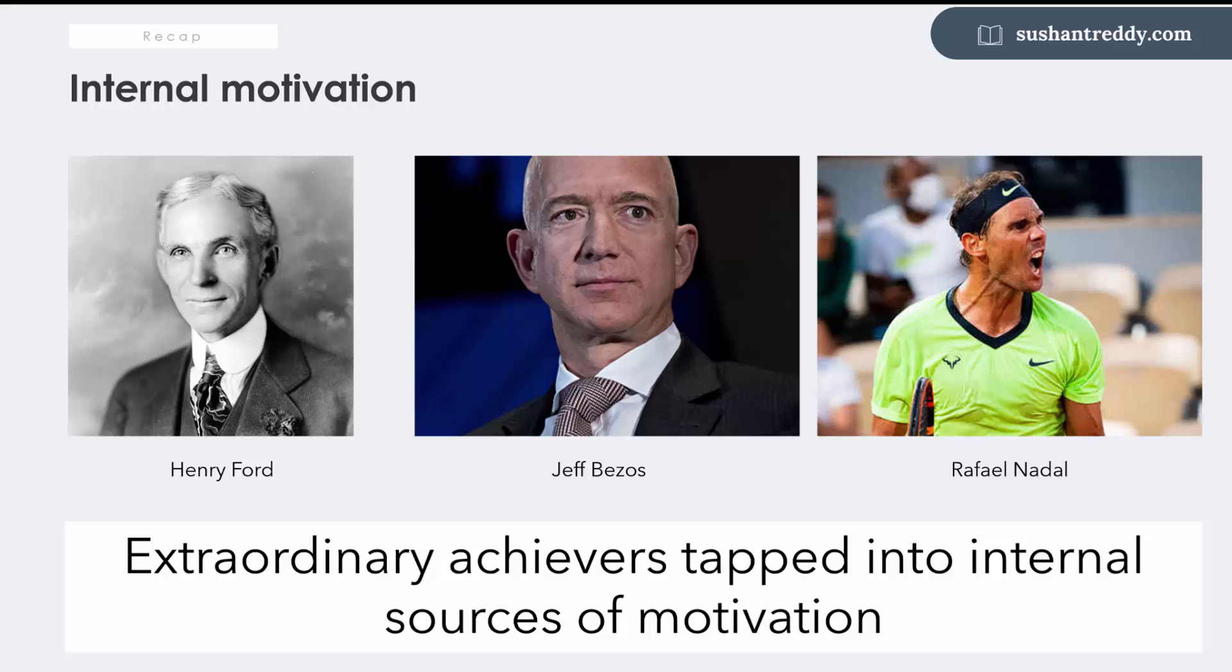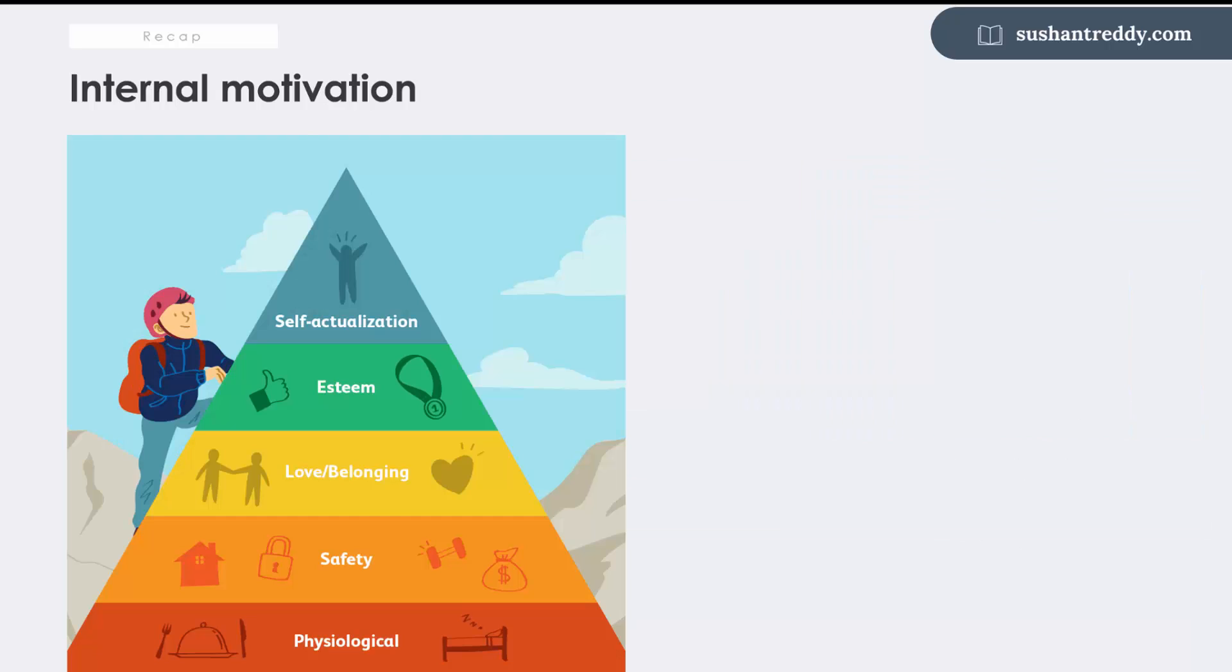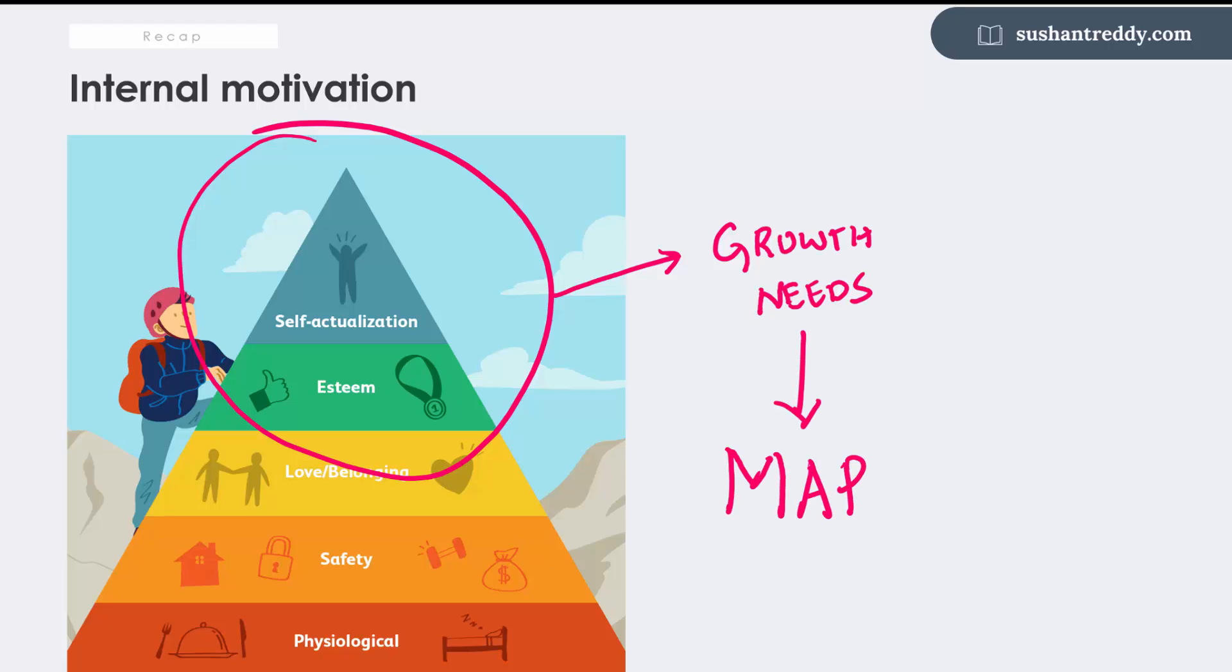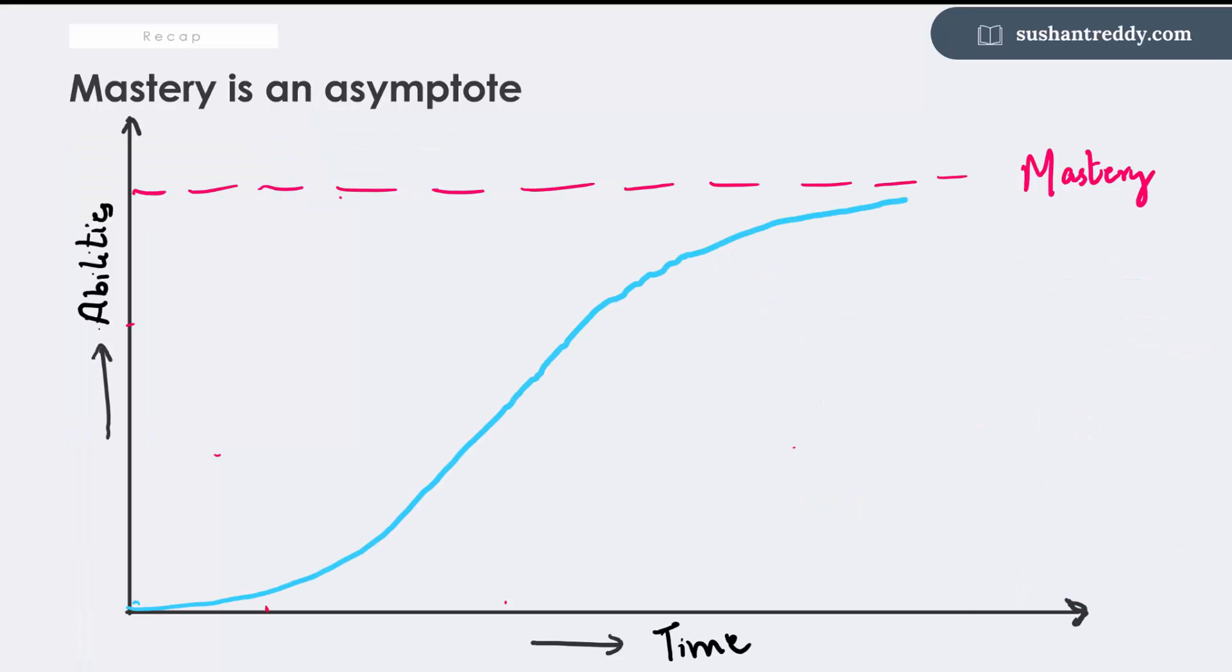We talked about the MAP framework. MAP stands for Mastery, Autonomy, and Purpose. Last episode, we discussed the properties of mastery. Skill is asymptotic to mastery—you can get close to mastery but never achieve it completely.